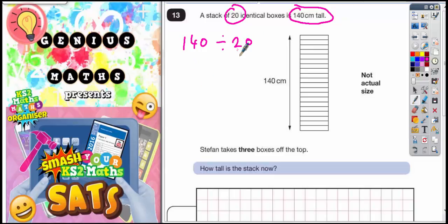Now what you could do is just count up in 20s. It's pretty easy to do. Some of you might be able to see that you can do that in your head anyway. You might just know that each box must be 7cm tall. But let's just count up in 20s.